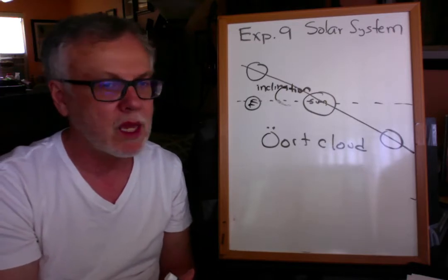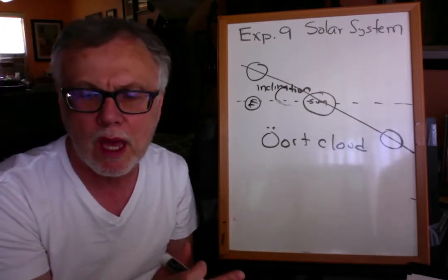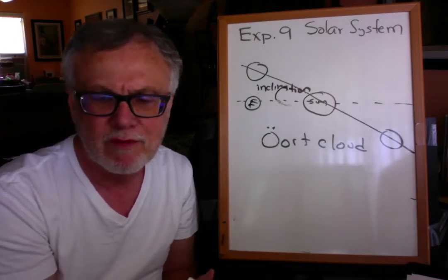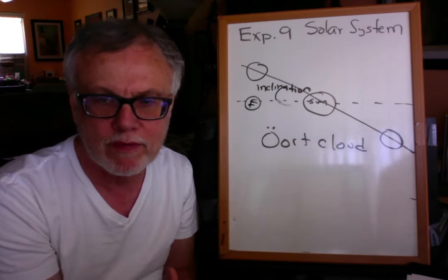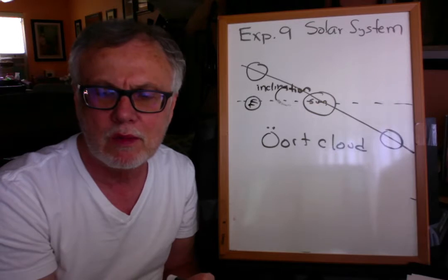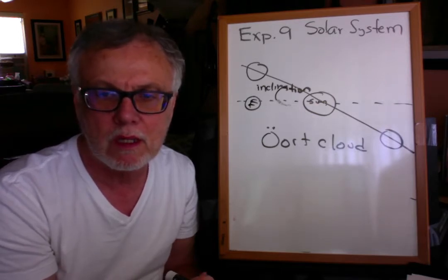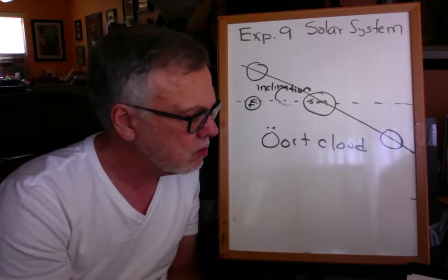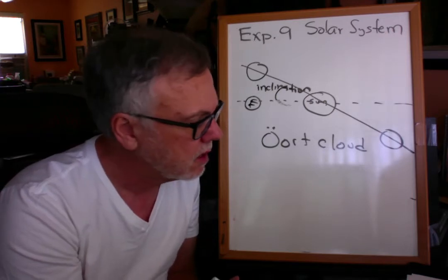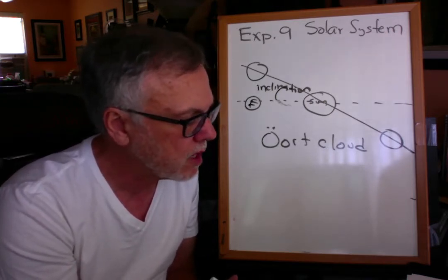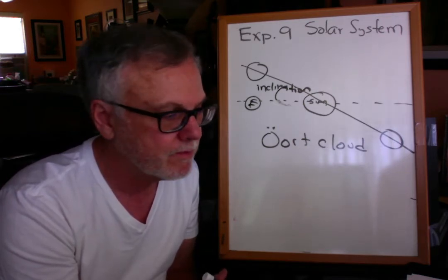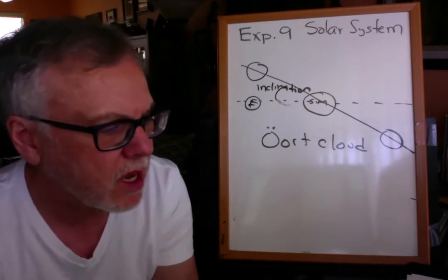Then look at how orbital sizes of planets change from the four central planets — which are small, hard, rocky, terrestrial planets — versus the outer planets, which are those gigantic Jovian giants. The inner planets are Mercury, Venus, Earth, and Mars. The outer planets are Jupiter, Saturn, Uranus, and Neptune. Find the differences in orbital size between Mercury and Venus, Venus and Earth, Earth to Mars, all the way out to the outer dwarf planets. Then answer those questions on page 115.